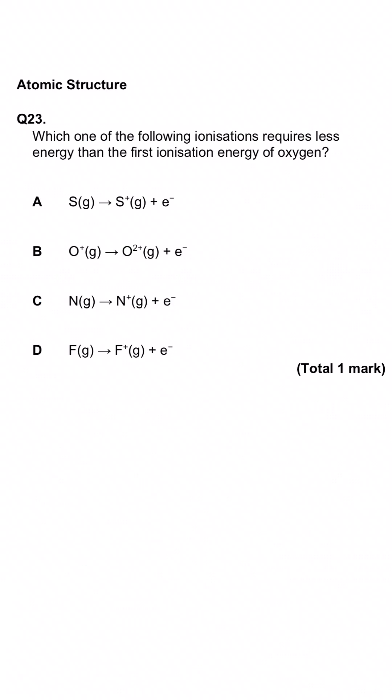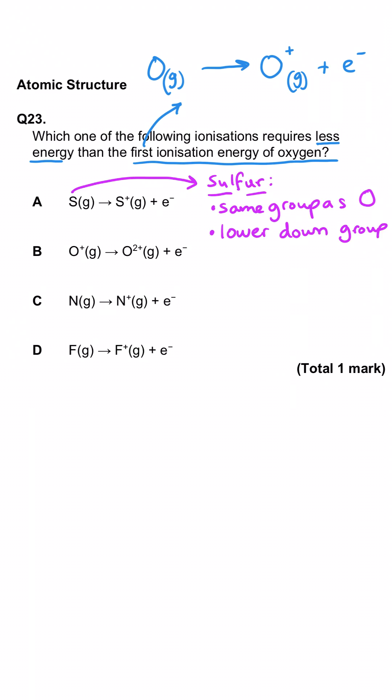This question is asking us which of the following ionizations requires less energy than the first ionization energy of oxygen. The first option is sulfur. It's in the same group as oxygen but it is lower down in the group which means it's got a larger atomic radius therefore more shielding therefore much less energy will be required to remove that electron. So A is the correct answer.